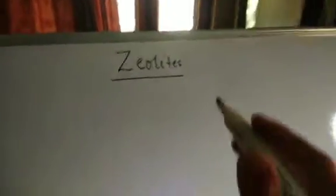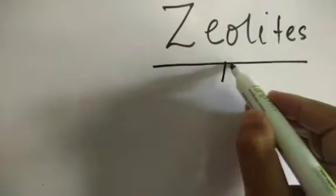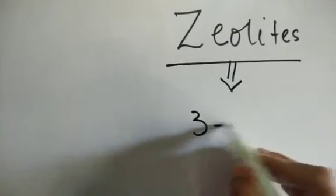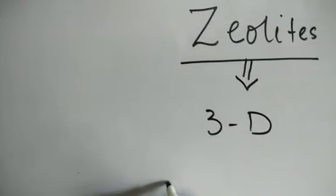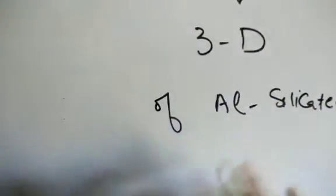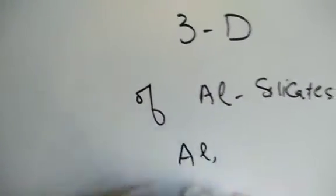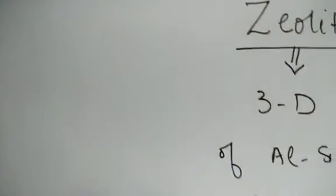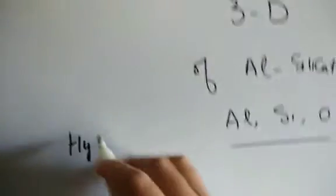Today's topic is Zeolites. Zeolites are basically a 3-dimensional network of aluminium silicate. The basic components are aluminium, silicon, oxygen, and water. So overall, zeolites are a 3D network of hydrated aluminium silicate — essentially hydrates with water inside.